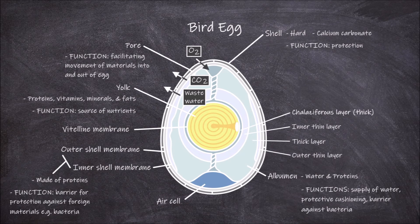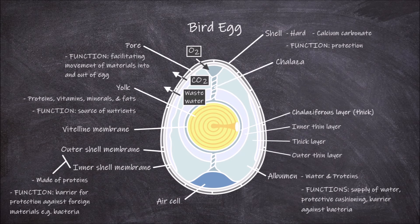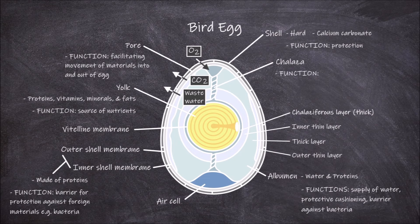The inner layer of albumin, the chalaziferous layer, surrounds the yolk. This layer is twisted along the long axis of the egg, forming rope-like structures known as the chalazae. The chalazae function in holding the yolk in the center of the egg.